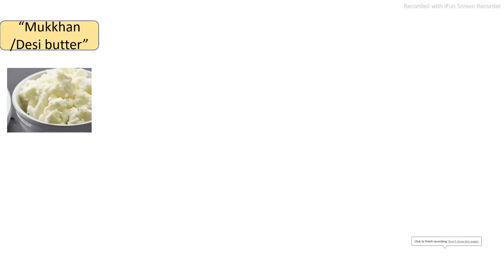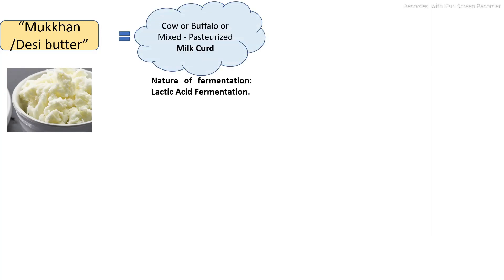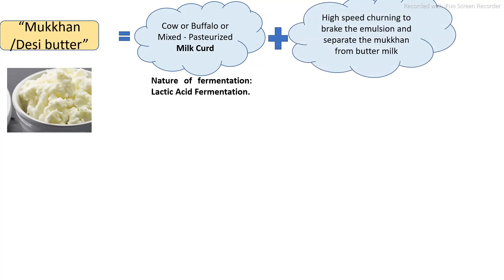Basically there are three types of butter. The first one is makhan or desi butter, which is the traditional production process. In home scale or medium scale production, milk is first converted into curd by fermentation using a starter culture. This curd is then added with water, followed by high speed churning to break the emulsion and form butter. The butter is separated from buttermilk, giving a naturally fermented flavor characteristic of desi butter.